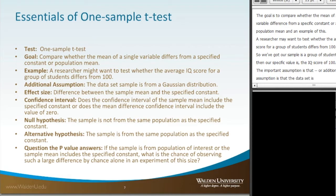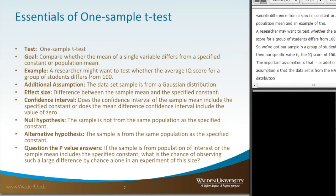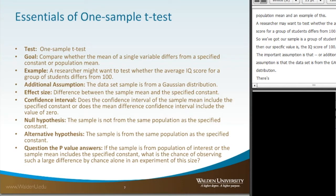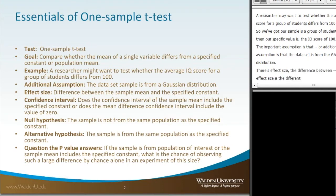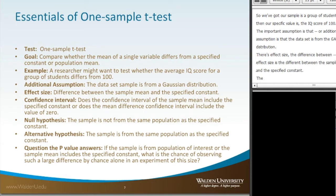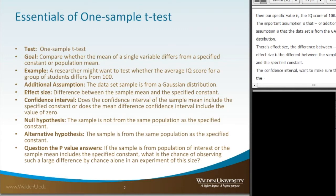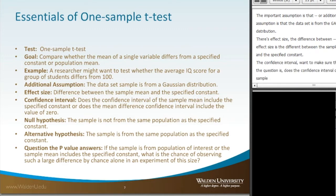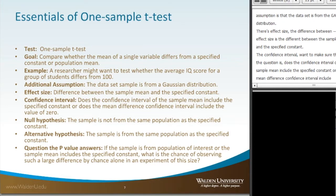When we look at effect size — and there's always an effect size with all statistical tests — the effect size is the difference between the sample mean and the specified constant. For the confidence interval, the question is: does the confidence interval of the sample mean include the specified constant, or does the mean difference confidence interval include the value of zero? We'll look at that in our examples.